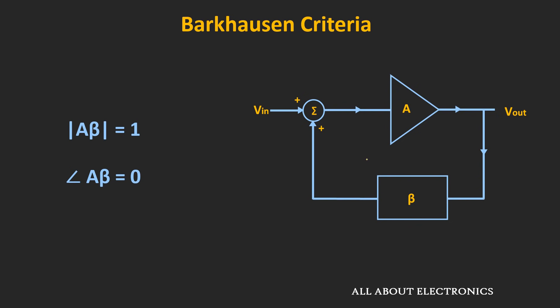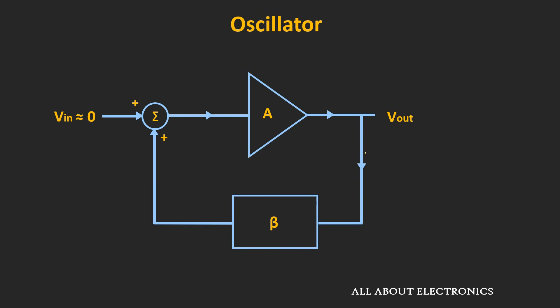So far, we have assumed that whenever this oscillator is switched on, some finite starting voltage is applied to it. But actually, no signal is applied to this oscillator, and still we are getting oscillations at the output. So the question is: how is it possible? How can we get oscillations at the output without giving any input to this oscillator?